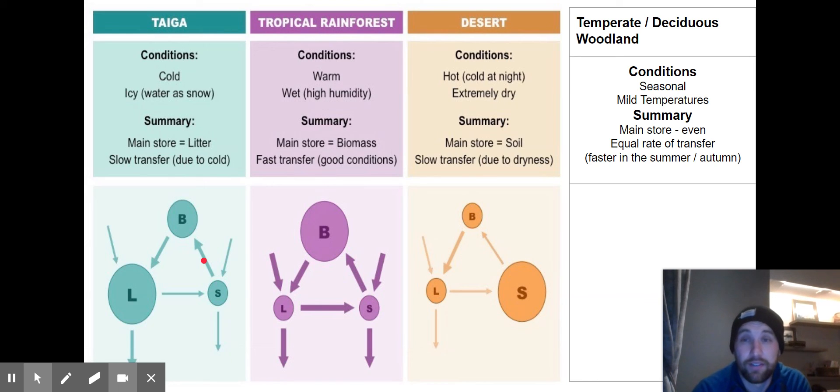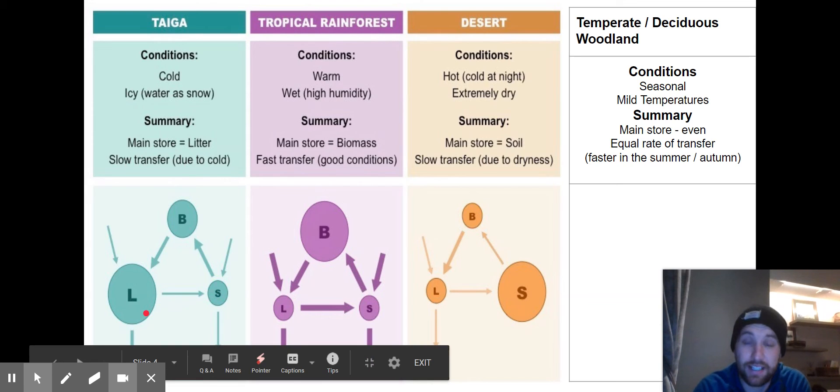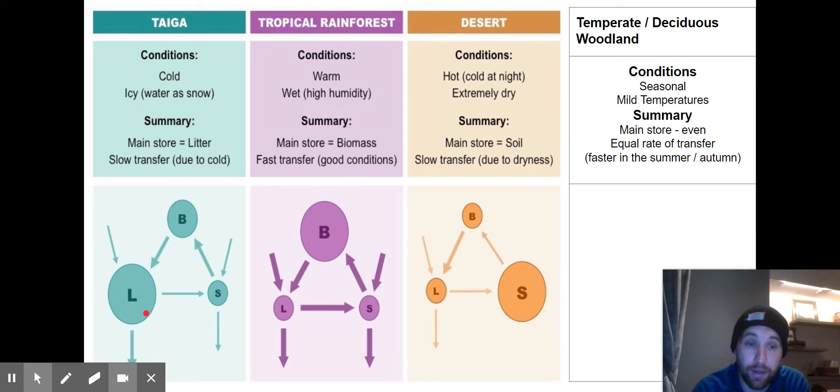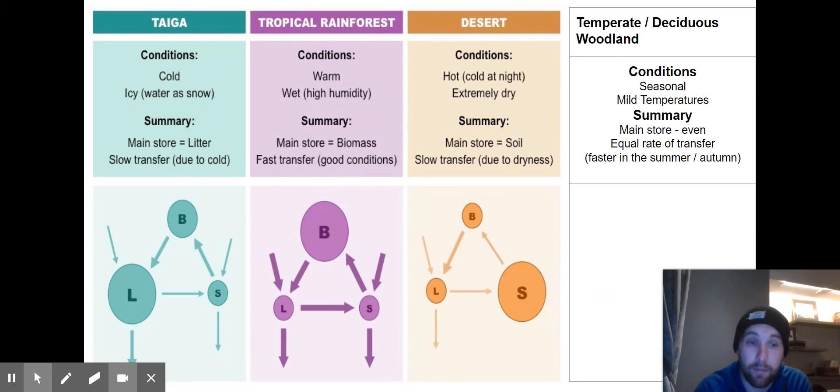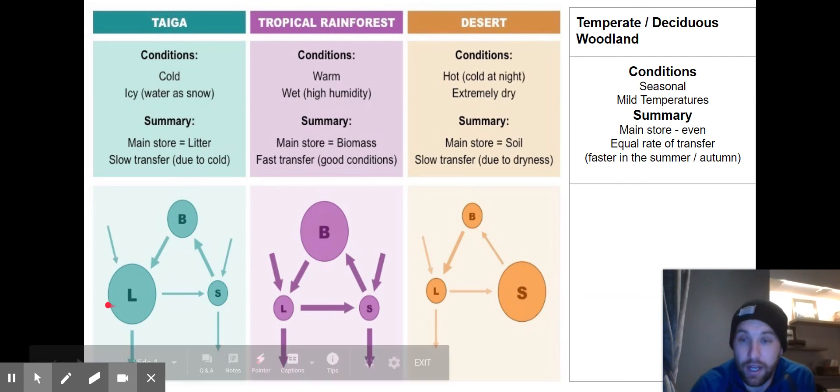If we were to look at the taiga, so the boreal forest or coniferous woodlands, those really really cold ecosystems, we have much less in the soil and much more stored in the litter, in the leaves which are falling off the trees, because those leaves decompose very very slowly due to the cold temperatures. So if you go to a kind of pine forest, you often find very thick layer of pine needles all along the floor because those cold temperatures mean the bacteria and microorganisms are working much much slower at breaking down that organic material. So a really thick leaf litter which stores the majority of the nutrients.